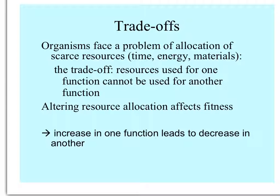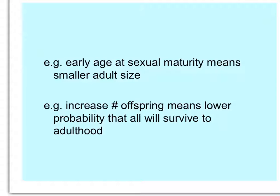Any organism has a problem of where to put its scarce resources — this can be literally nutrients, materials for building, energy, or time. If you use resources for one function, those resources aren't available for another function, and altering the allocation affects fitness. Because resources are limited, an increase in one function inevitably leads to a decrease in another. Animals that reach sexual maturity early have small adult size, and more offspring produced usually means smaller offspring with lower survival probability.